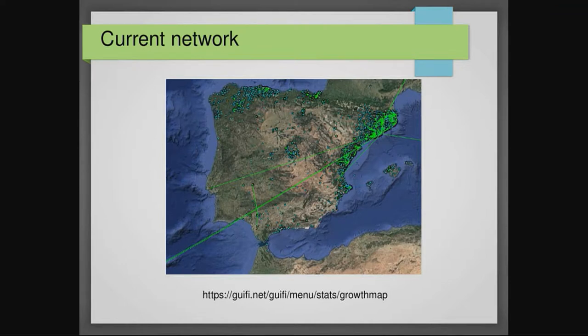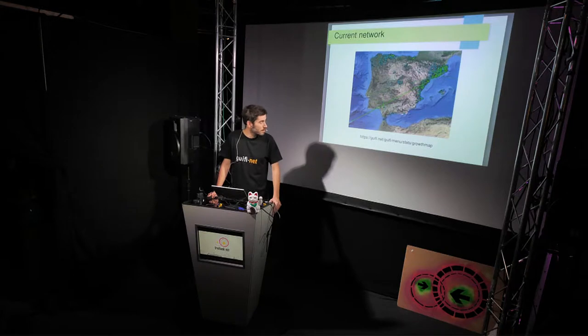That's the current network in 2017. As you can see, the main focus of the network is in Catalonia — it's the area where it was born. Now it is expanding to other regions of the Iberian Peninsula, like the Basque Country, Asturias, or even Madrid, Seville, and Andalusia in the south.